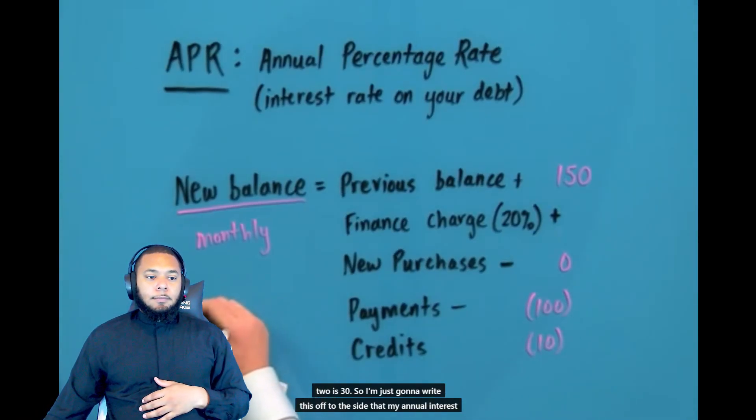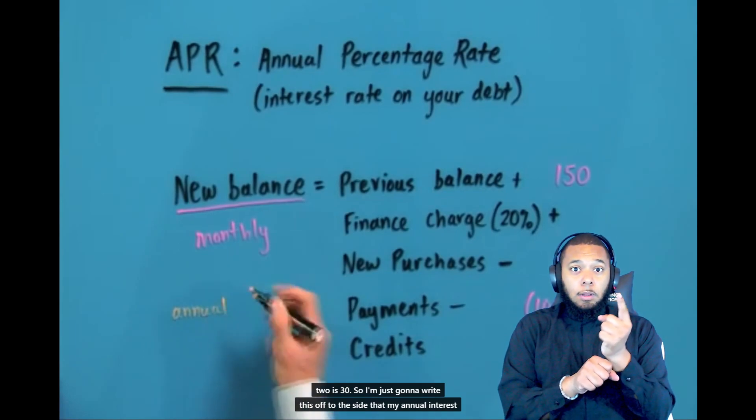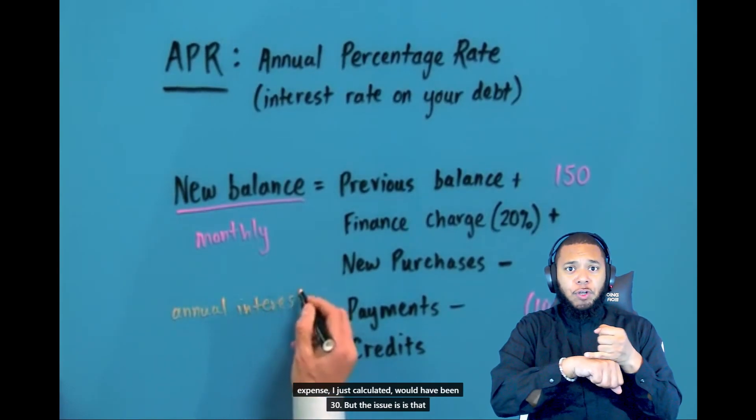So 20% of 150 might be hard to do in your head. But 10% of 150, you could do immediately — you just divide by 10. 10% is our friend, because whenever you need to take 10% of something, you just divide by 10. If I divide 150 by 10, I know it's 15. Well, I don't want 10%, I want double that. Double of 10% is 20%, so if I did 10% of 150 and got 15, all I need to do is double it to get to 20%. So 15 doubled is 30. My annual interest expense would have been $30.